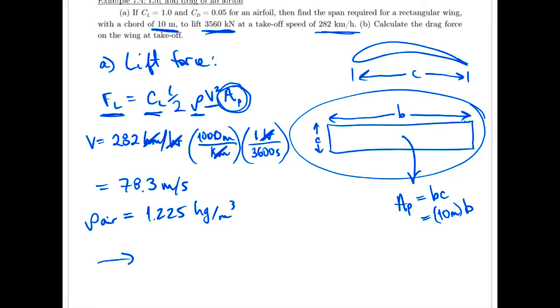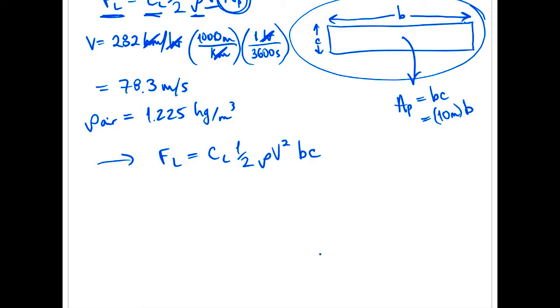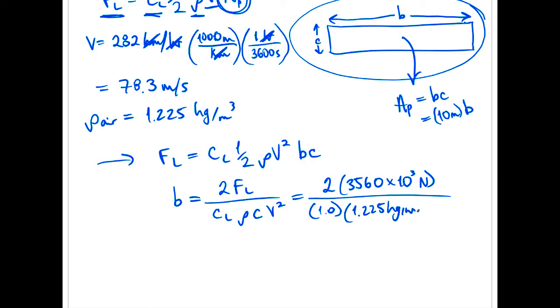Alrighty. So we're going to sub in then for the lift force here and then rearrange. So CL half rho V squared, B times C, and scroll down here, rearrange for B. B equals 2 FL over CL rho C V squared. We sub in 2 times, that's given in kilonewtons. So let's get that to newtons so that we can balance our units. Lift coefficient given as well, 1.0. Density, we've got 1.225 kilograms per meters cubed. C was given, 10 meters. And V squared, what was that? 78.3 squared meters squared.